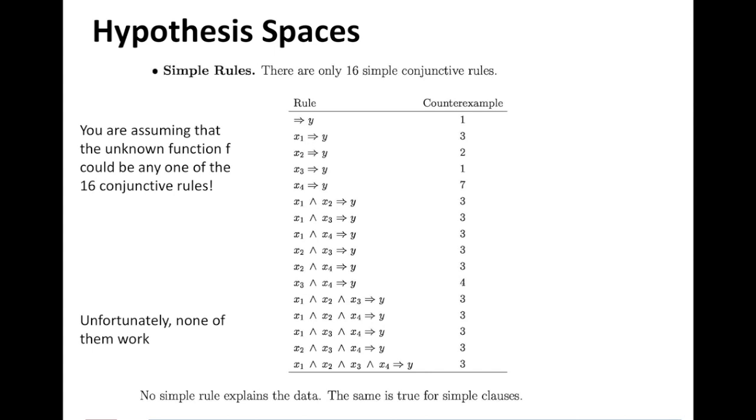It turns out for all of this, there is a counter example that exists in our dataset. So we had 7 data points, remember? That's our training dataset. If one of these functions excludes one of those data points, then it really does not fit the data, right? So we cannot consider that. Unfortunately, none of these seem to work. So no simple rule explains the data, which means this hypothesis space is not ideal for this dataset.